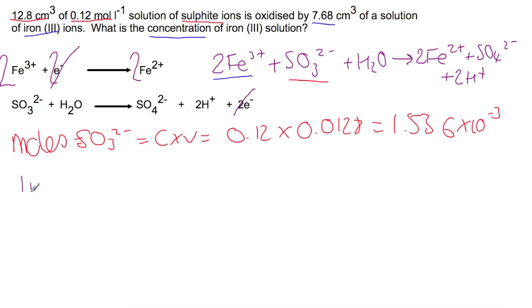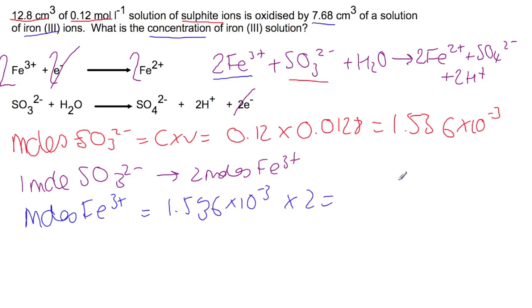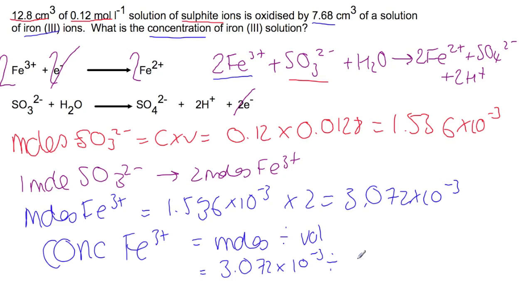Looking at the mole ratio: 1 mol SO₃²⁻ requires 2 mol Fe³⁺, so multiply by 2 to get the moles of iron: 3.072 × 10⁻³ mol. The final step is to find the concentration of Fe³⁺: moles ÷ volume = 3.072 × 10⁻³ ÷ 0.00768 = 0.4 mol/L.